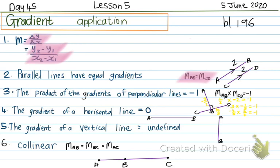Number 6 is about collinear. Collinear means, if I have 3 points that are collinear, they are all on the same line — 3 points on the same line. The gradient of AB will be equal to the gradient of BC, and equal to the gradient of AC. But I don't need to work out all of them; I can just work out AB and BC. Those gradients will all be equal when points are collinear.